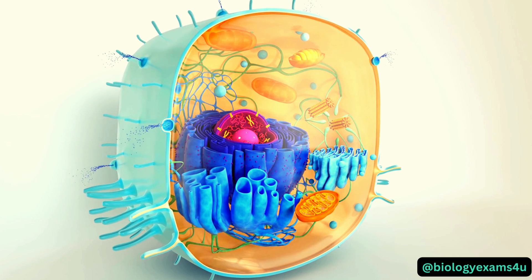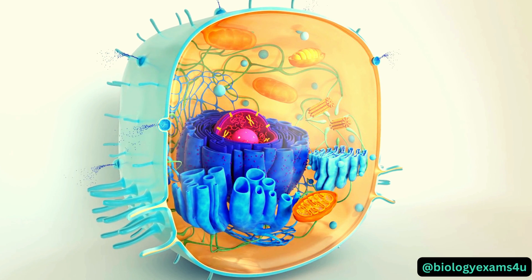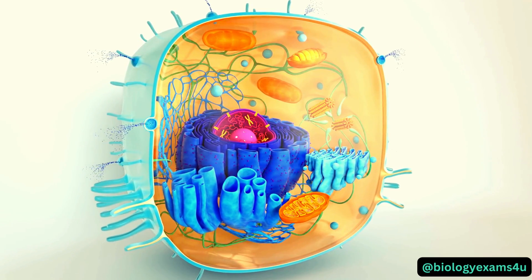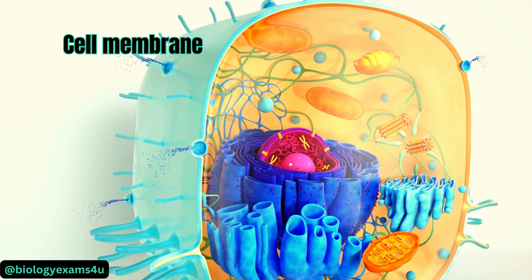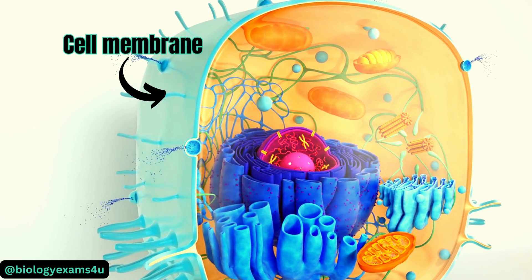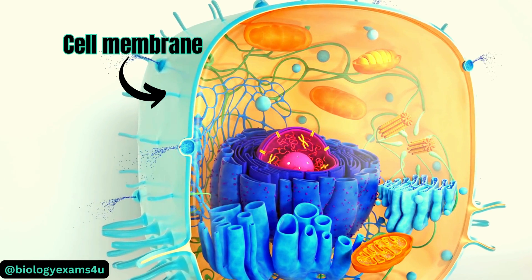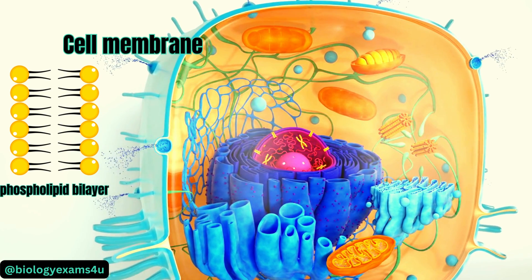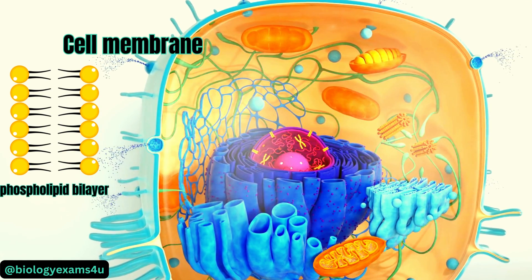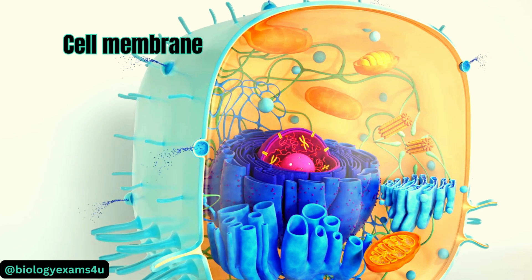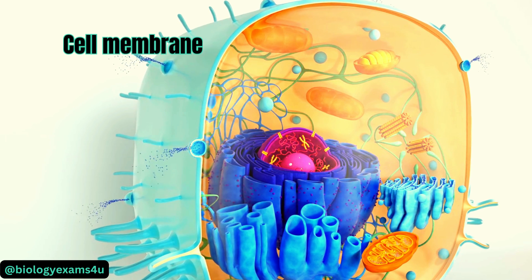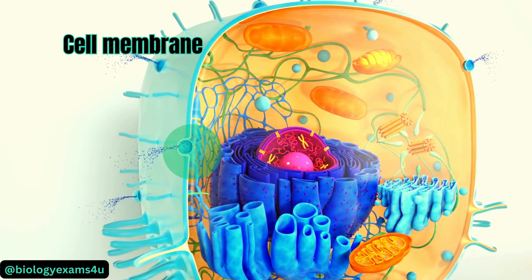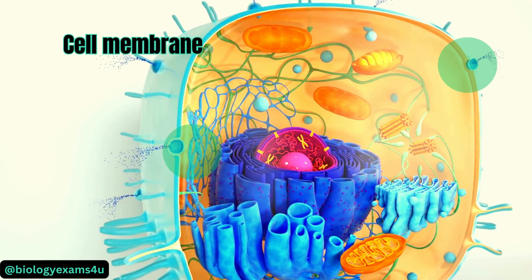Let us understand the position of cell organelles in an animal cell in order to understand the function of each organelle in a three-dimensional manner. Let's begin with the cell membrane, the outermost boundary in an animal cell. The cell membrane is a thin flexible phospholipid bilayer barrier that surrounds the cell and protects it from the environment. The barrier prevents or regulates movement of water and other polar molecules, and there are specialized protein channels on the cell membrane for exchange of molecules.